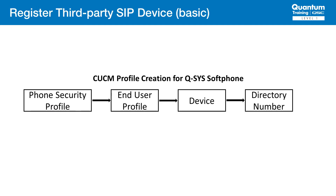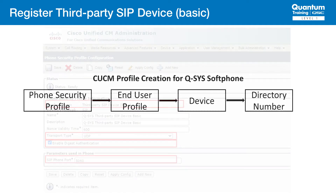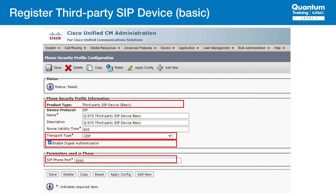The steps to configure an account in CUCM for the Q-SYS softphone are as follows. First, we create the security profile that will be used for the softphone. Next, we create the end user profile that includes the credentials the softphone will use to register. Finally, we create the phone definition, which consists of a device and an associated directory number. The directory number is the phone number used for the softphone. Let's look at each step in detail. When one and only one softphone is required in a given Q-SYS design, it's typically registered as a third-party SIP device basic. Each SIP endpoint in CUCM requires licensing credits, and this is the least expensive option. The very first part of defining the softphone in CUCM is to create a phone security profile. The items to note here pertinent to the Q-SYS configuration are the name, the transport type, digest authentication, and SIP phone port.